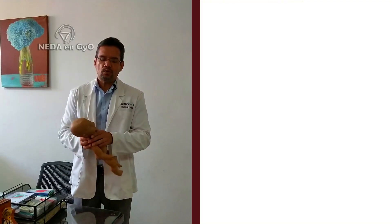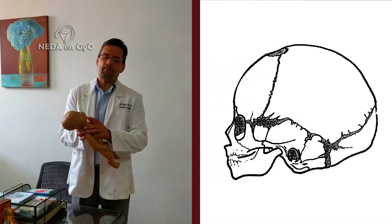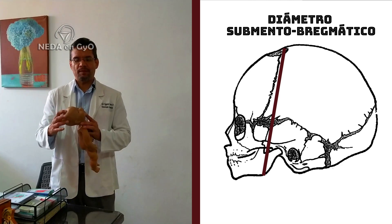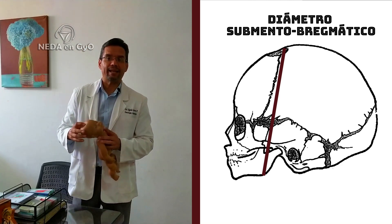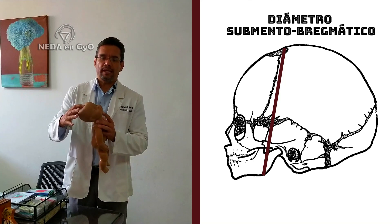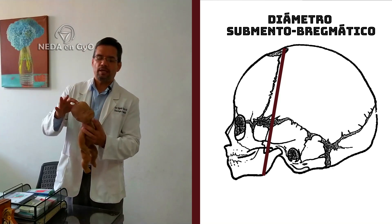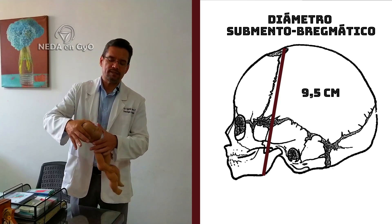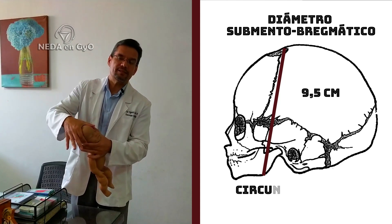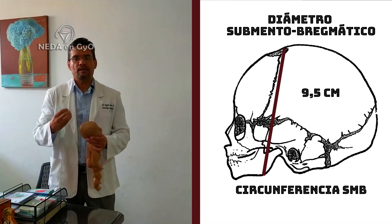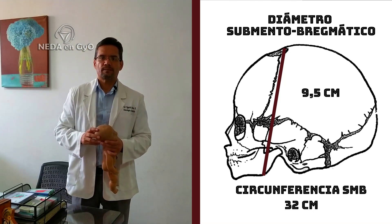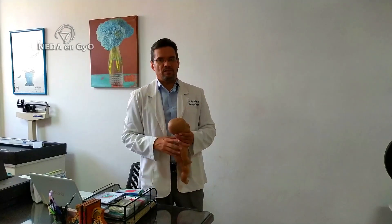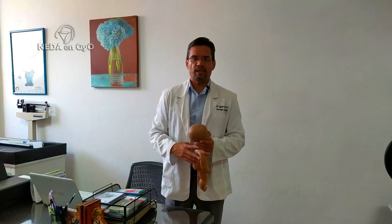También tenemos el diámetro submentobregmático, que va desde por debajo del mentón hasta la fontanela anterior. Este es el diámetro que rige la presentación de cara y tiene una longitud de igualmente 9,5 cm. También forma una circunferencia, la circunferencia submentobregmática, que también mide 32 cm. Estos son los diámetros con menor tamaño de cabeza tanto en diámetro como en circunferencia.